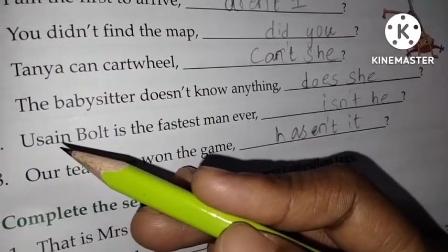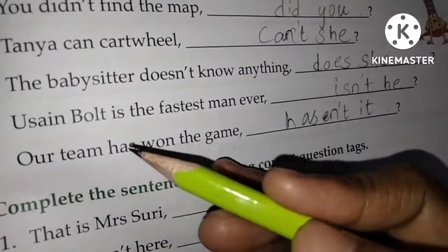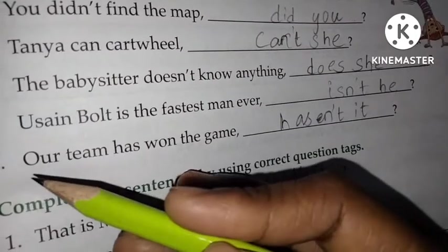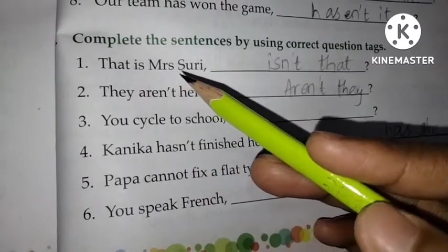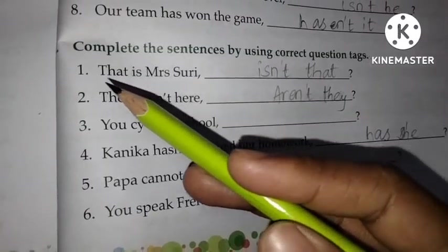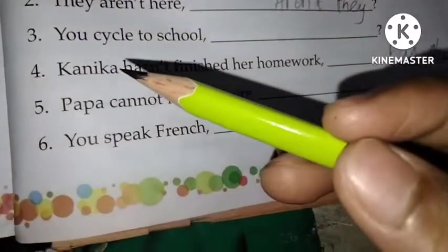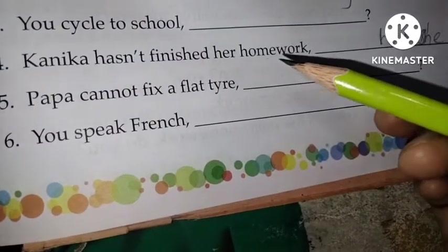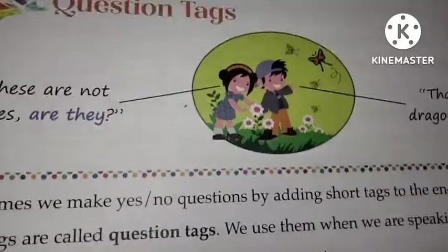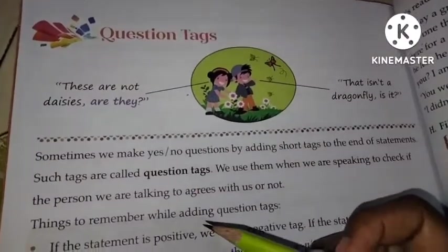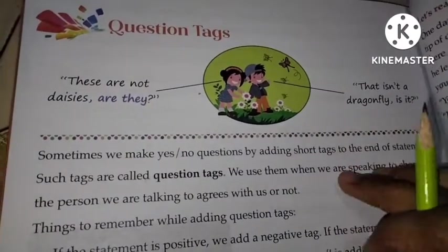Bolt is the fastest man ever, isn't he? — 'is' is the helping verb, and Bolt is male, so 'isn't he'. 'Our team has won the game, hasn't it?' — 'has' is the helping verb. 'That's Mrs. Shuri, isn't that?' 'They aren't here, are they?' 'Kanika hasn't finished her homework, has she?' I hope all of you have understood. Please subscribe.